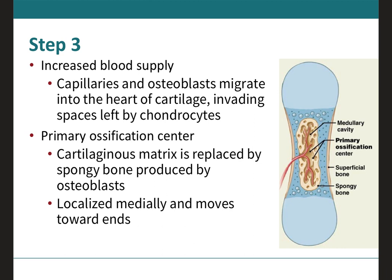In step three, the main event is the formation of the primary ossification center. Blood vessels that surrounded the cartilage model now enter the diaphysis and spread out, accompanied by osteoblasts that populate the middle section of the diaphysis and begin depositing matrix. The cartilaginous matrix is replaced by spongy bone produced by the invading osteoblasts, forming the primary ossification center. This center begins in the middle and spreads outward toward the epiphysis.